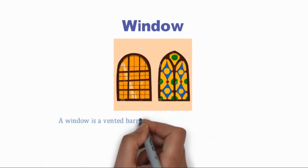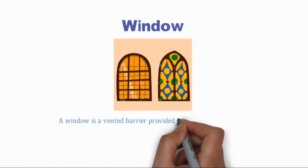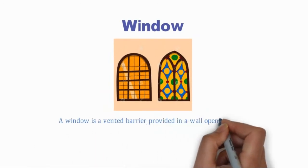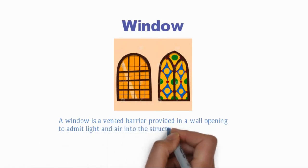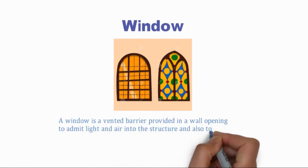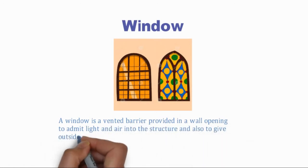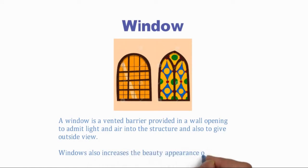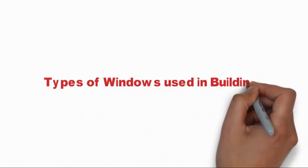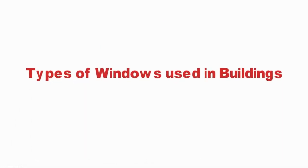A window is a vented barrier provided in a wall opening to emit light and air into the structure, and also to give outside view. Windows also increase the beauty and appearance of the building. Types of windows used in buildings: